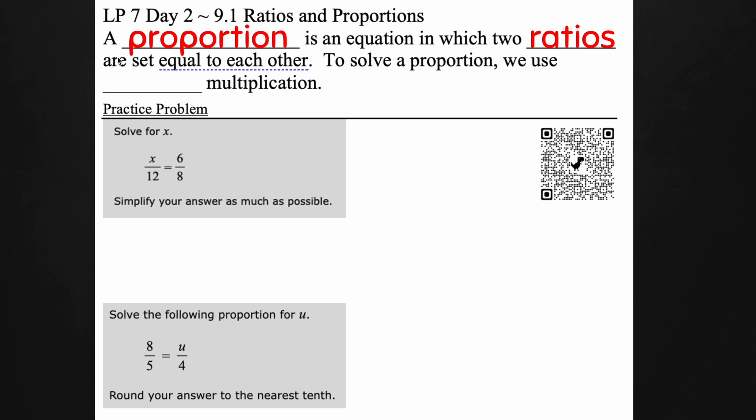To solve a proportion we use cross multiplication. Now remember a ratio can be written in three different ways, but the main way we're going to set this up for a proportion is as a fraction.